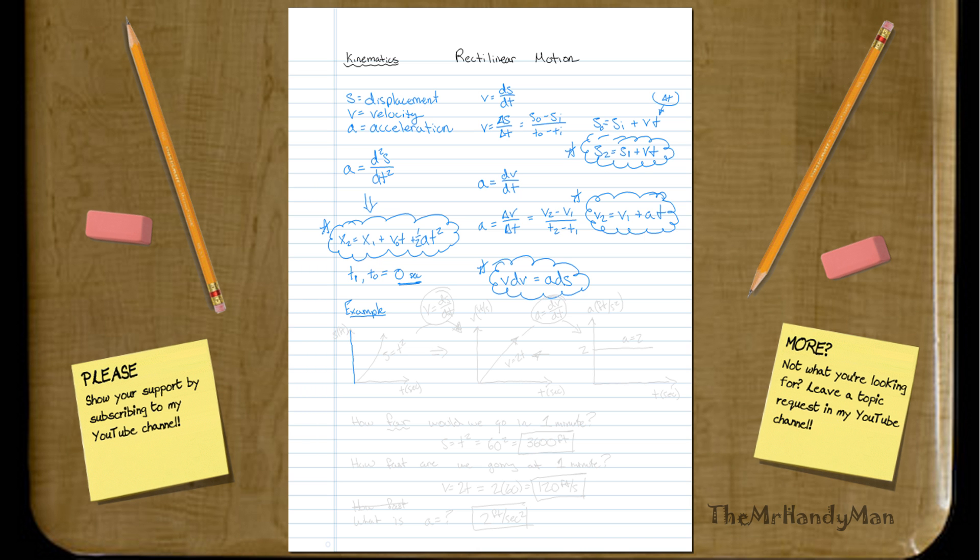In this example, let's just say we do the typical one we always do, right? S, let's just say this is S in feet, and this is T in seconds. Okay. Well, let's say you have this little function here, and this is S equals T squared.